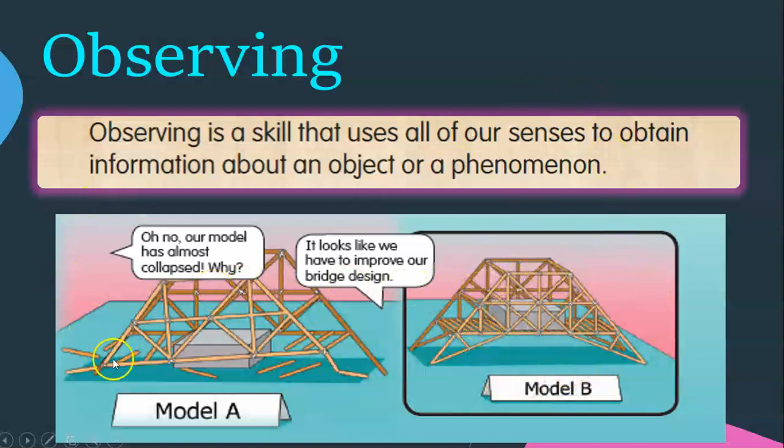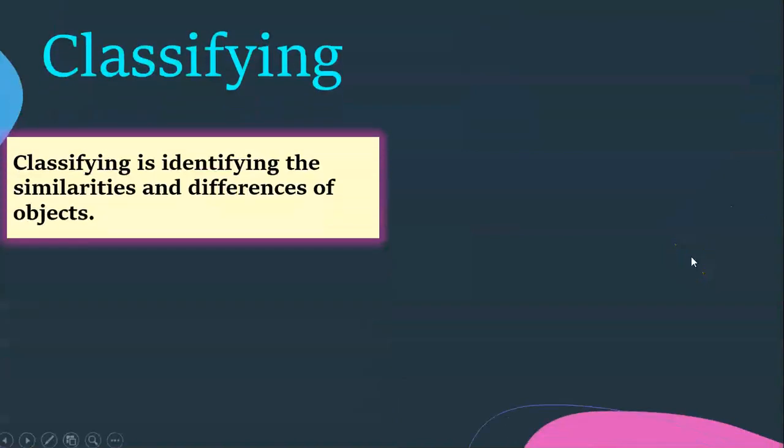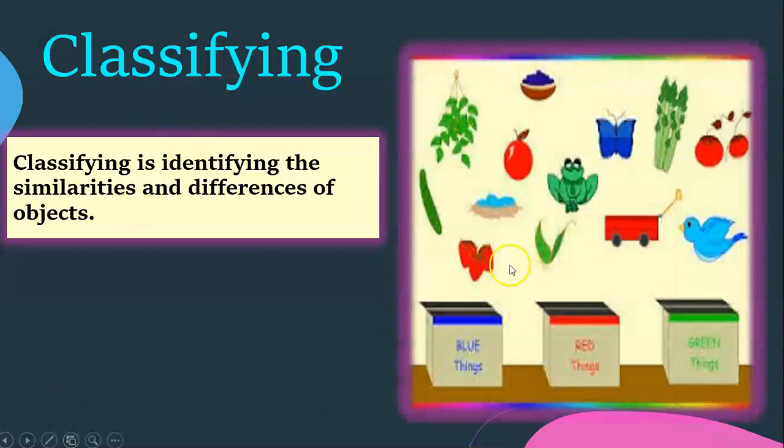So here you are doing observation to identify which model is stronger. Let's look at classifying. Classifying is identifying the similarities and differences of objects. You know, right? What is similarities and differences? Similarities is common characteristics, and differences is what are the different characteristics among the objects.